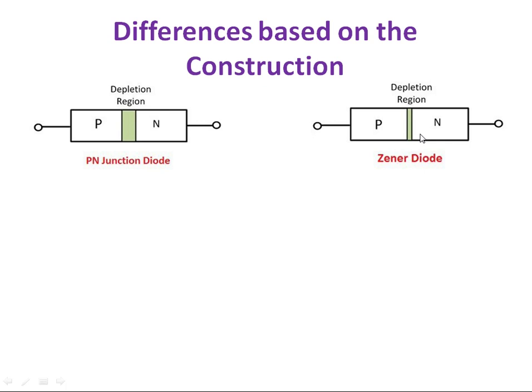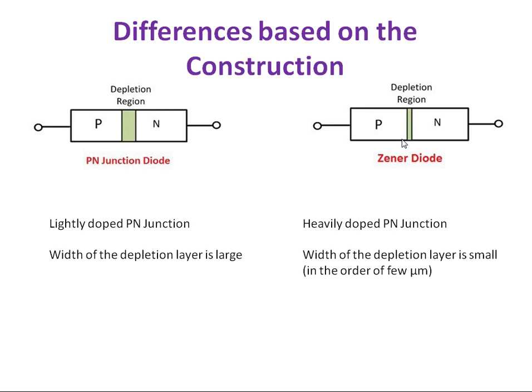Here the PN Junction is lightly doped, so the width of the depletion layer is very large. But in the case of Zener Diode, it is a heavily doped PN Junction. The width of the depletion layer is small, in the order of few micrometers. That is a major difference. Zener Diode is heavily doped. PN Junction Diode is lightly doped.